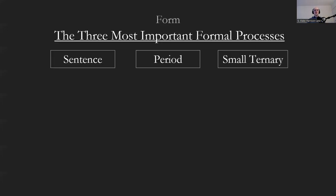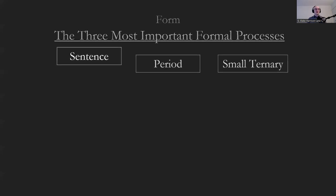According to Caplin, the three most important formal processes are the sentence, the period, and the small ternary. We're going to probably get through sentence and period today in our five-minute video.